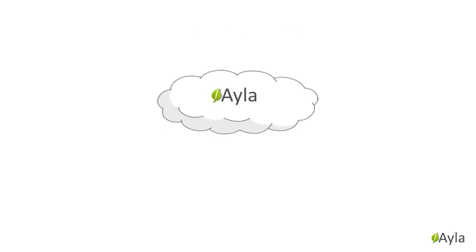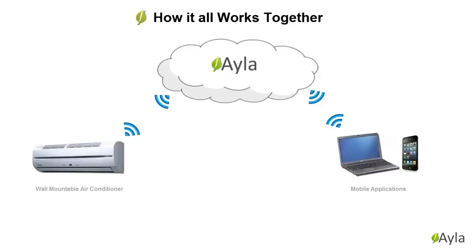Let's first begin by quickly explaining how the Aayla service works. The Aayla service provides two-way communication that allows a device to be controlled from anywhere in the world. The Aayla platform gives the ability to send commands through the cloud and down to a controllable device. Since Aayla allows for two-way communication, the controllable device also has the ability to send data back to the cloud to the end user.